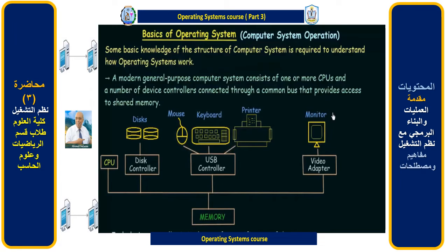Here I have a diagram which we can use to explain this. Let us break this sentence into parts. A modern general purpose computer system consists of one or more central processing units. What is a CPU? CPU is the main part — we can call it the brain of the computer system. It is the processing unit where all computations, processing, and calculations take place.